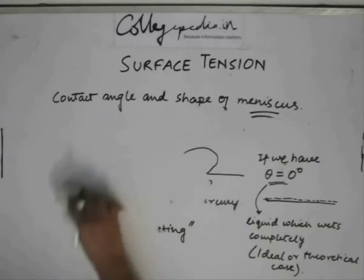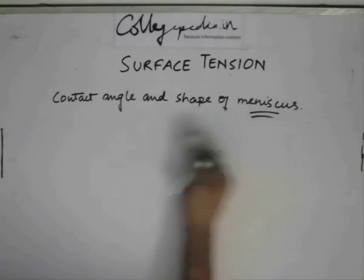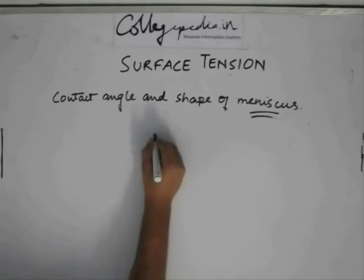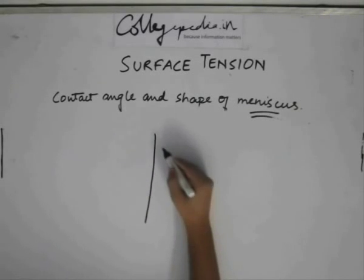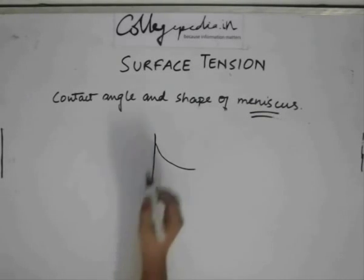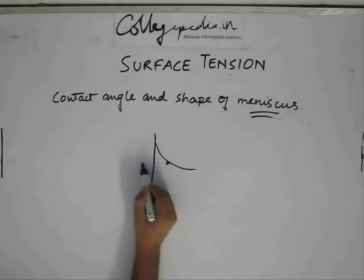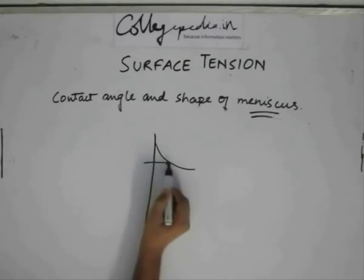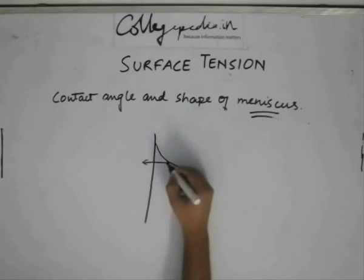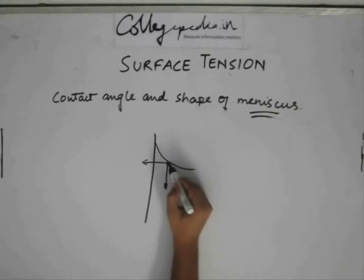If we consider the forces acting at the junction of the solid and liquid, say this is the solid wall and this is the meniscus. Considering a small point on this surface: the adhesive force is the force between the solid and liquid acting in this direction, there is a weight acting on this fluid element, and we have a cohesive force acting into the bulk of the liquid.